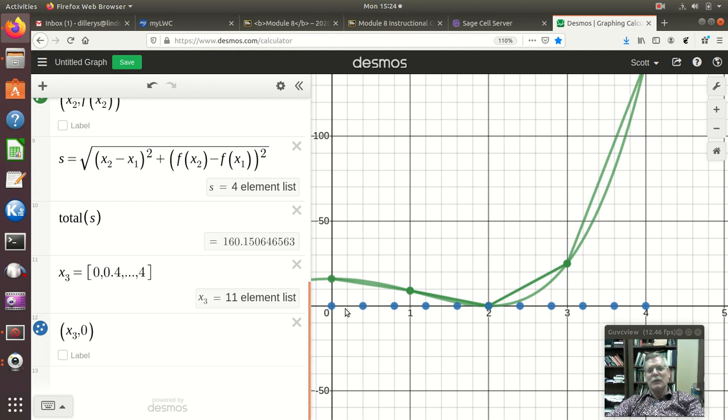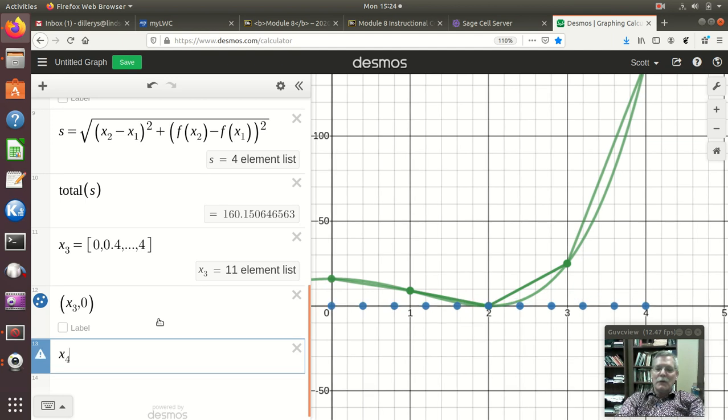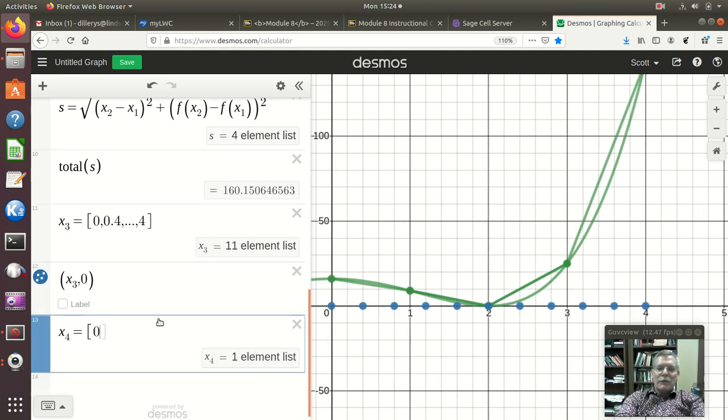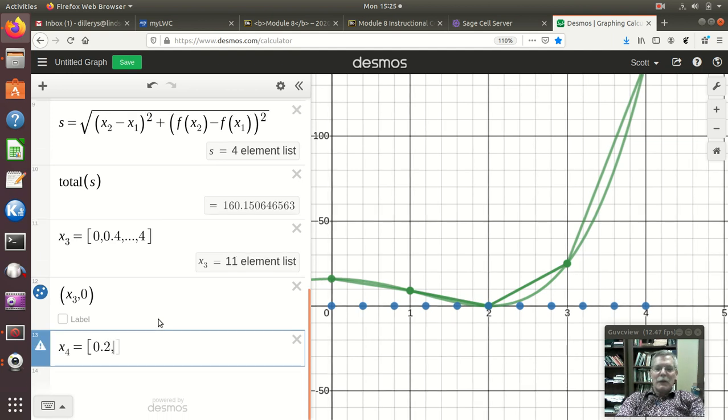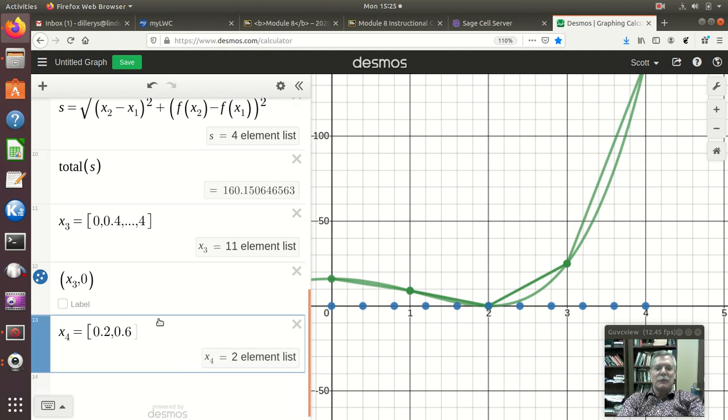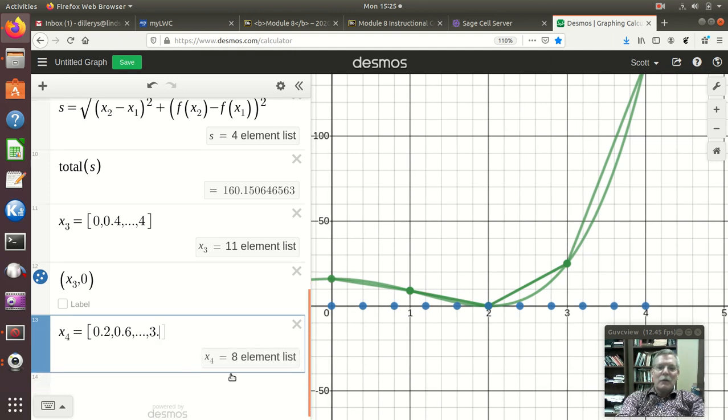So, I'm going to make a list. I'll call it x4 equals. And, here, I'll go 0.2, comma, and then 0.6, comma, dot, dot, dot, comma. And, my last one is going to be halfway in here. So, 3.8. And, there's a 10 element list. And, I could plot those the same way I did up here.